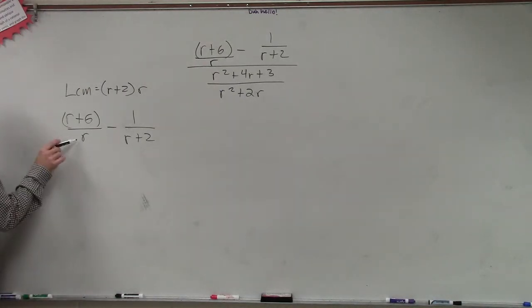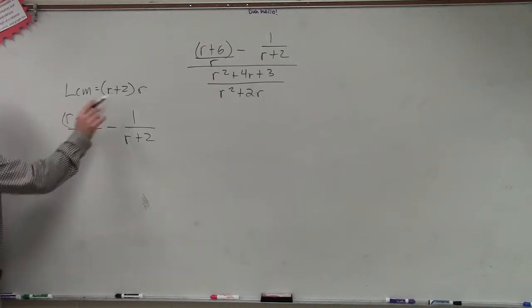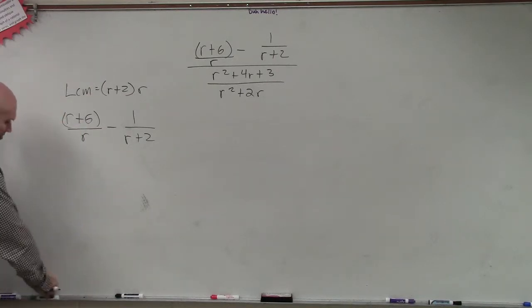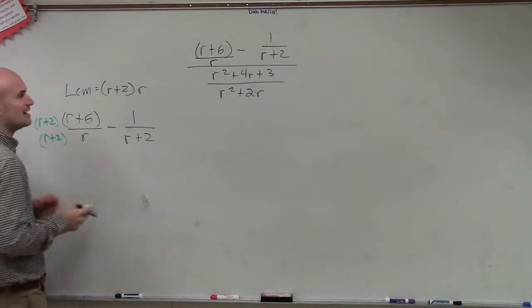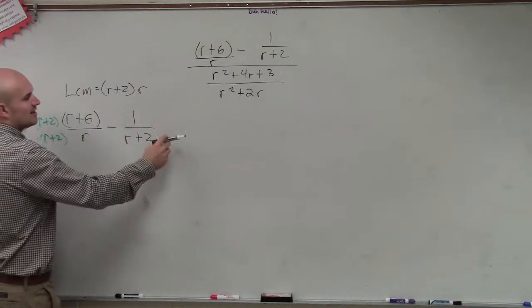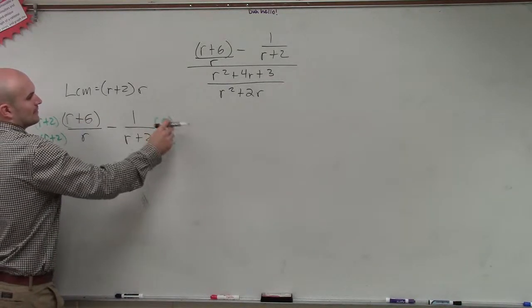So what we need to do is to say, all right, if this is already r, to get it to r plus 2 times r, I need to multiply it by r plus 2. And if this is already r plus 2, now I need to get it to r plus 2 times r, I need to multiply it by r, right?